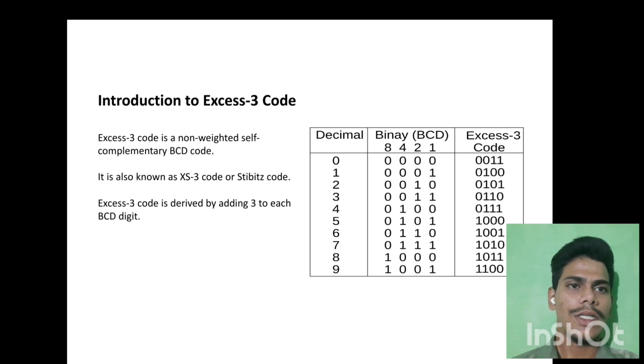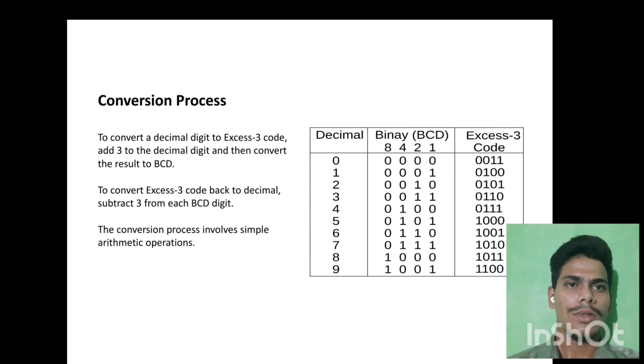We see the decimal binary BCD XS3 code. First decimal 0 in binary form 000. In XS3 code 0011. In such a way, the decimal code is formed from 0 to 9.